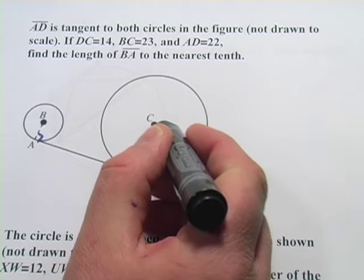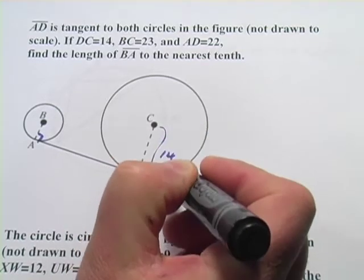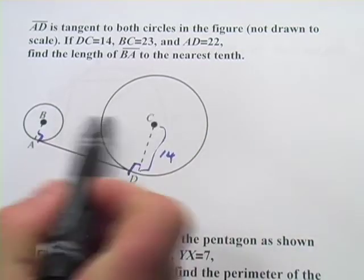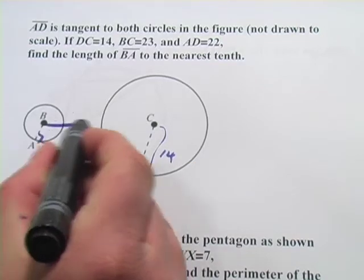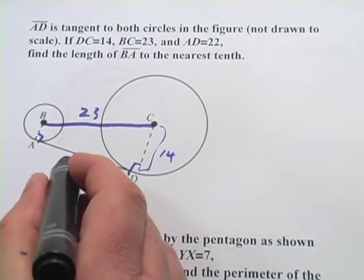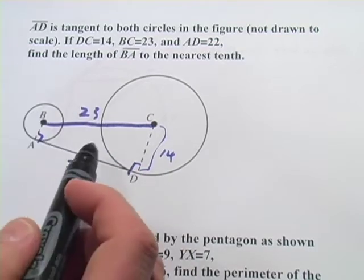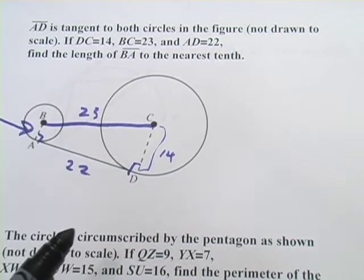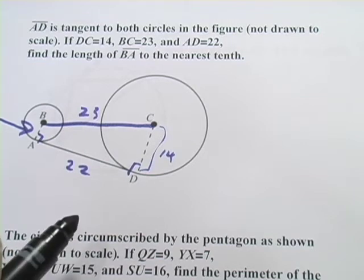Let's see what else we've got here. If DC is 14, so this is 14, BC, okay so that's a line they haven't drawn in for us. Let's go ahead and draw that in. BC is 23 and AD is 22. Find the length of BA, so we want to find this guy to the nearest tenth. And at first that looks a little difficult. Maybe if we had a right triangle we could use the Pythagorean theorem somehow, but it looks like we have a quadrilateral.